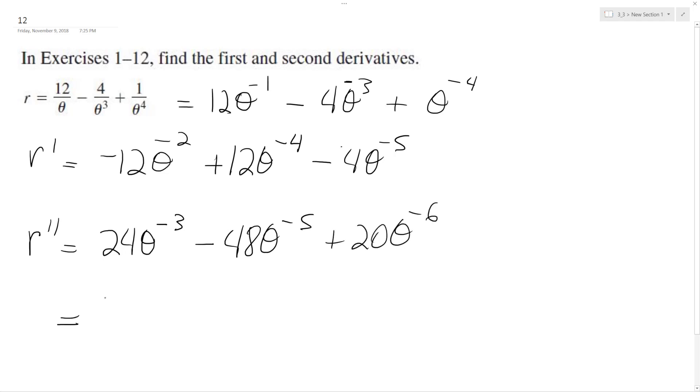And I'll just show you what it's like to write the exponents on the bottom. 24 over theta raised to the 3rd, minus 48 over theta raised to the 5th, plus 20 over theta raised to the 6th.